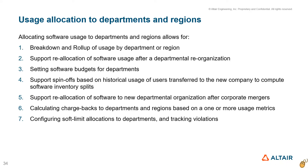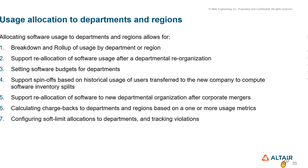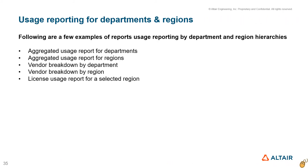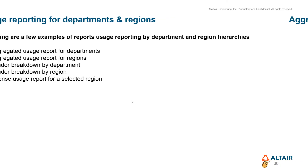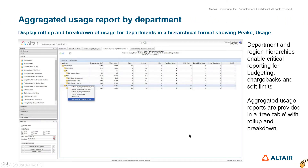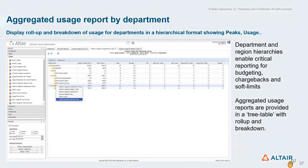Usage allocation to departments and regions allows SAO to support spinoffs and mergers, chargebacks, and soft limit setup. This report shows usage breakdown for a software feature by department in a hierarchical format.